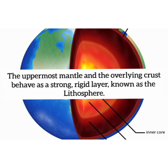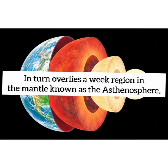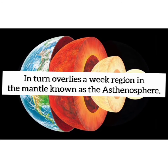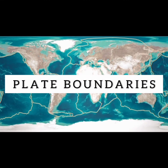The uppermost mantle and the overlying crust behave as a strong, rigid layer known as the lithosphere, which is broken into segments commonly referred to as plates. These plates in turn overlie a weak region of the mantle known as the asthenosphere. Earth's major plates are called lithospheric plates or tectonic plates, and the lithosphere is composed of about two dozen segments of irregular size and shape.